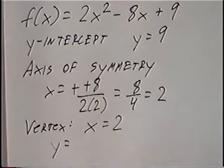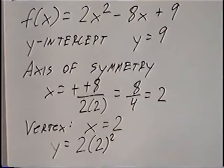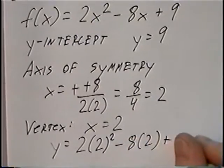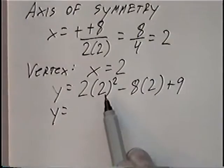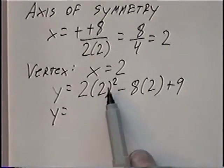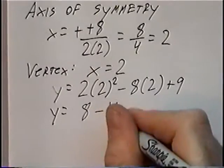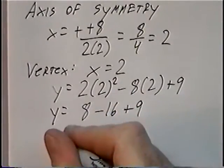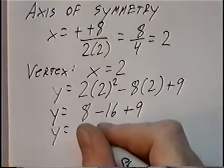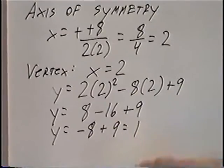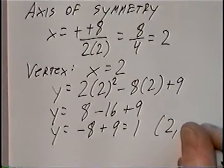Solving, we'll have y = 2(2)² - 8(2) + 9. Following PEMDAS, we do exponents first: 2 squared is 4, times 2 is 8. Negative 8 times 2 is -16, plus 9. Then adding and subtracting left to right: 8 - 16 = -8, and -8 + 9 = 1. So the vertex is x = 2, y = 1, written as the point (2, 1).